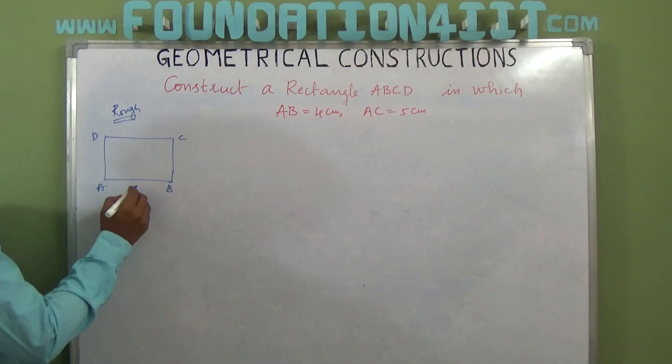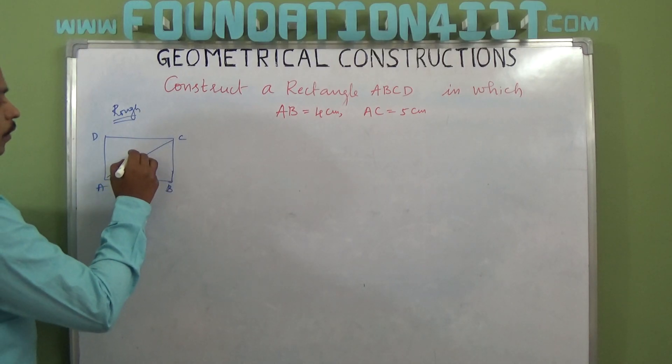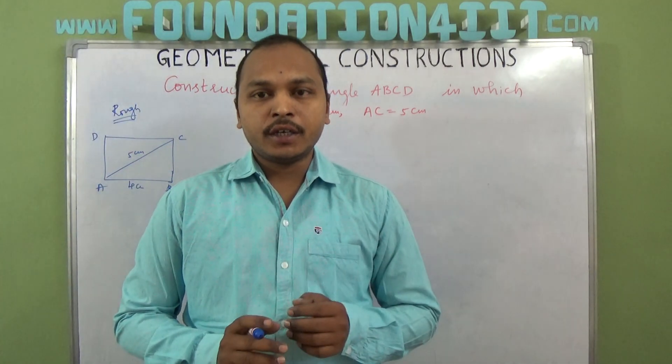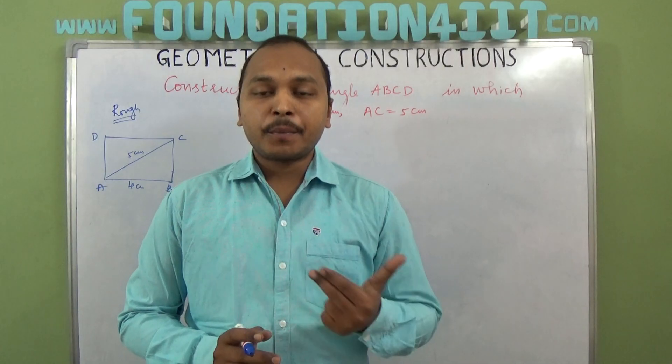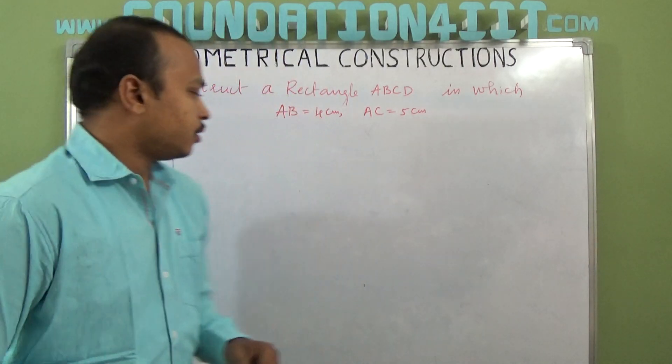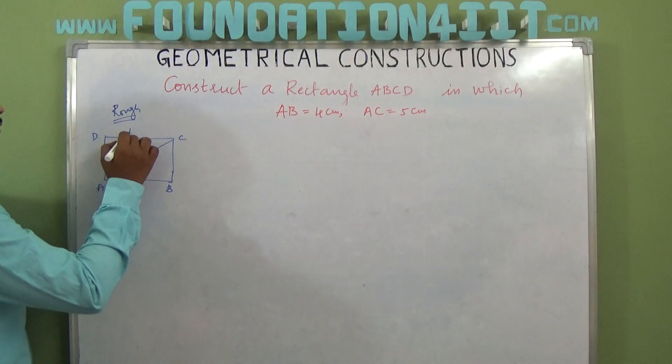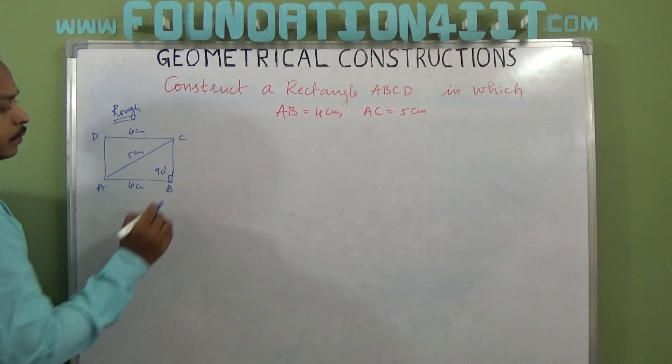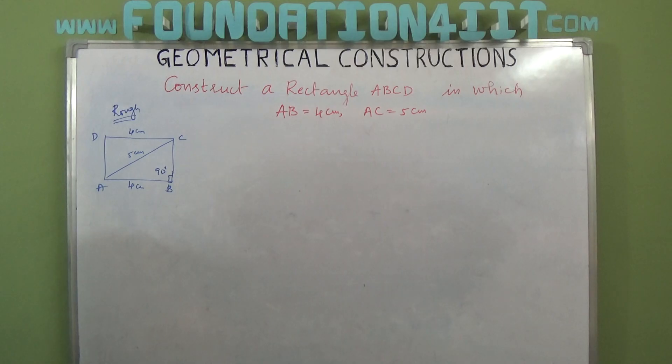So ABCD, AB is 4 cm and AC is 5 cm. The property we need to use is every angle is 90 degrees in a rectangle and opposite sides are equal. So if it is 4 cm, this is also 4 cm and every angle is 90 degrees. So angle B, angle C, everything is 90.